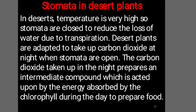How does stomata act in desert plants? In desert, temperature is very high, so stomata are closed to reduce the loss of water due to transpiration. Desert plants are adapted to take up carbon dioxide at night when stomata are open. The carbon dioxide taken up at night prepares an intermediate compound which is acted upon by the energy absorbed by the chlorophyll during the day to prepare food.